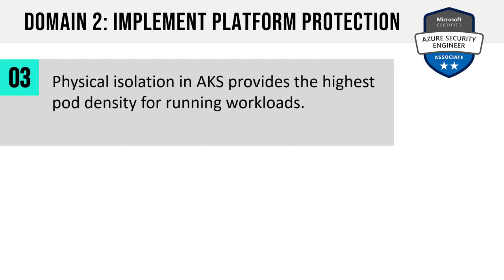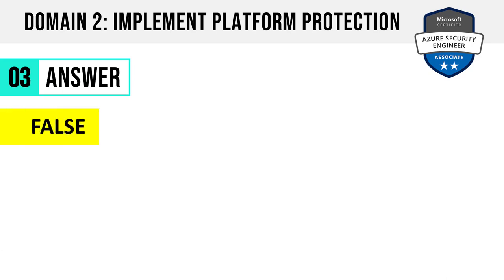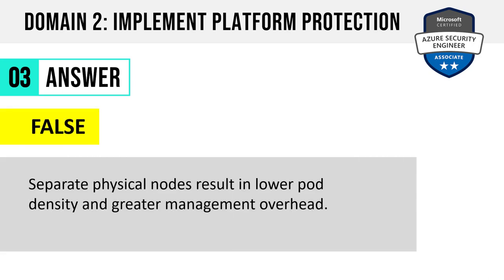Number 3. Physical isolation in Azure Kubernetes Service provides the highest pod density for running workloads. True or false? The answer is false. Separate physical nodes result in lower pod density and greater management overhead. Logical isolation with shared infrastructure gives us greater pod density and lower management overhead. Watch for that keyword — physical.